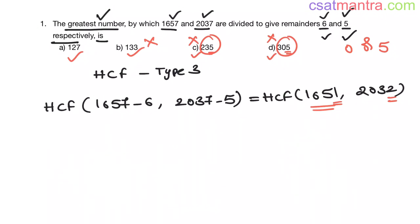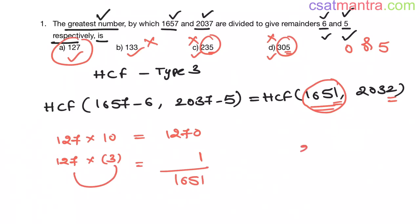Now let's see whether 1651 is divisible by 127 or not. 127 times 10 equals 1270, and we need 1651. We need 1 here, 127 is there, so here the number should be 3, because 7 times 3 is 21. In 21, last digit is 1. Now 127 times 3, that equals 381. So 0 plus 1 is 1, 7 plus 8 is 15, 2, 3, 1 that is 6, and 1 is 1. So 1651.